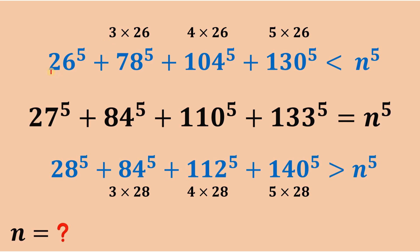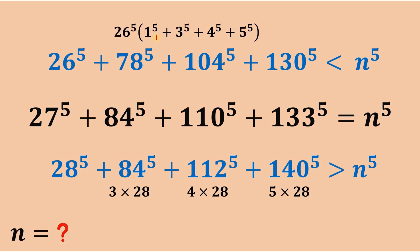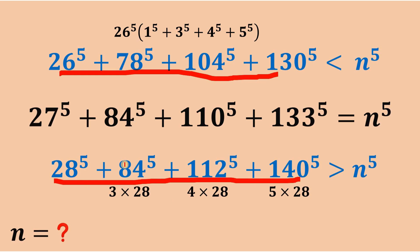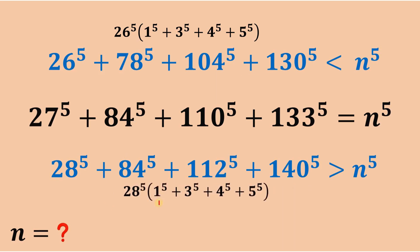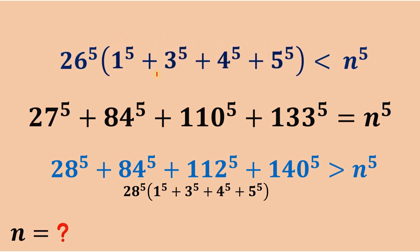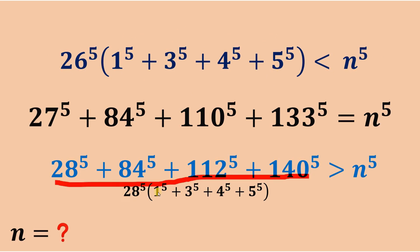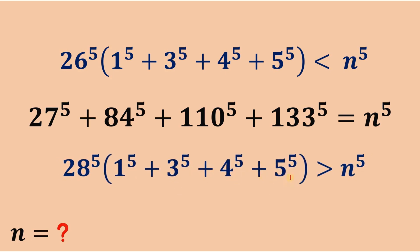Since 26 raised to the fifth power is 1 times 26 raised to the fifth power, we can factor out 26 raised to the fifth power from the lower bound terms. This gives us 26 raised to the fifth power multiplied by the quantity 1 raised to the fifth power plus 3 raised to the fifth power plus 4 raised to the fifth power plus 5 raised to the fifth power. Similarly, factoring out 28 raised to the fifth power from the upper bound gives us 28 raised to the fifth power multiplied by the same sum: 1 raised to the fifth power plus 3 raised to the fifth power plus 4 raised to the fifth power plus 5 raised to the fifth power.